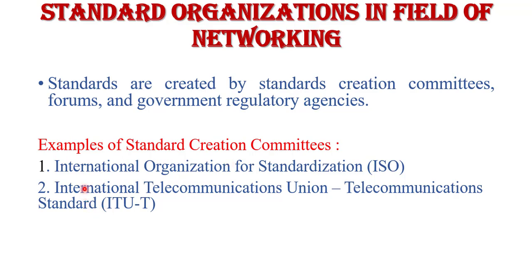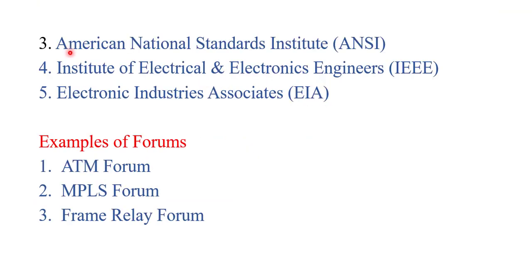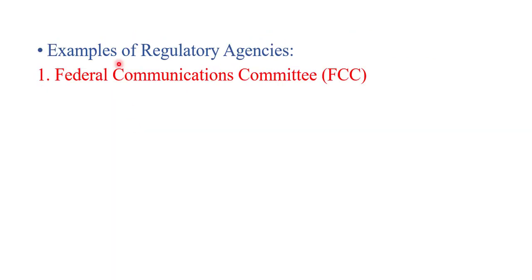Next are standard organizations. In the field of networking, there are a number of organizations that provide standards, created by standardization committees, firms, and government regulatory agencies. Examples of committees include ISO (International Organization for Standardization), ITU-T (International Telecommunication Union for Telecommunication Standards), IEEE (Institute of Electrical and Electronics Engineering), and EIA (Electronic Industries Association). Examples of forums include ATM Forum, MPLS Forum, and Frame Relay Forum. An example of a regulatory agency is the FCC (Federal Communication Commission).